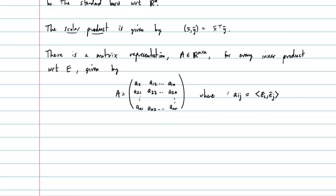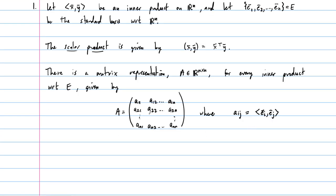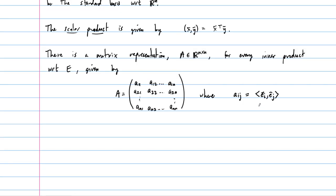For the scalar product, this is just E_i transpose times E_j. But by linearity, this matrix must obey certain properties. For one thing, the matrix A must be symmetric because inner products are symmetric — you can change the order and it will not change the outcome. So we focus on the fact that A is a symmetric matrix.